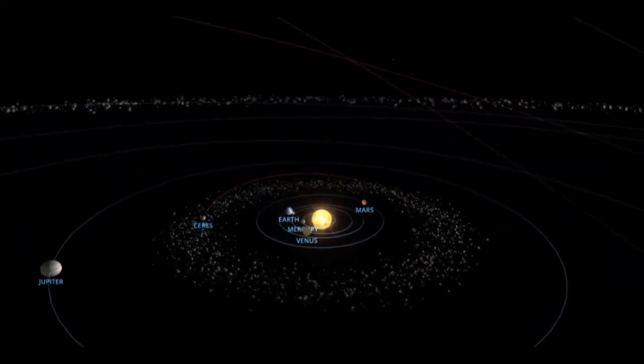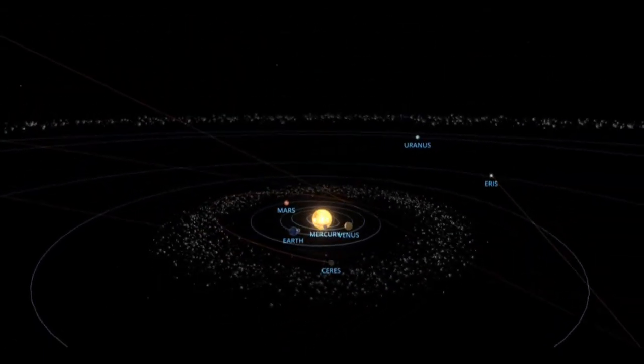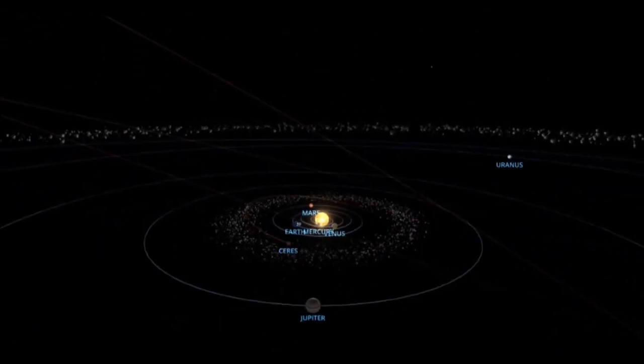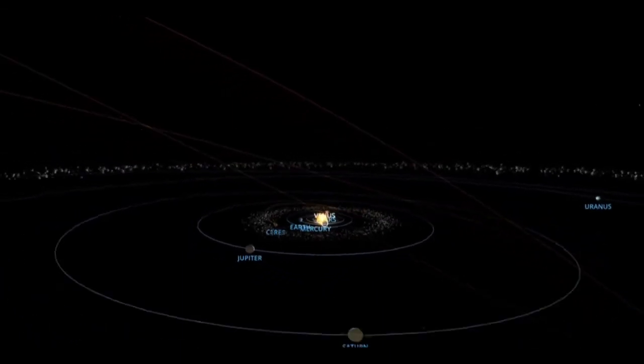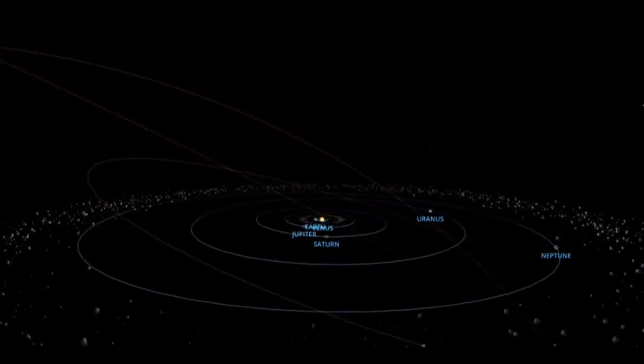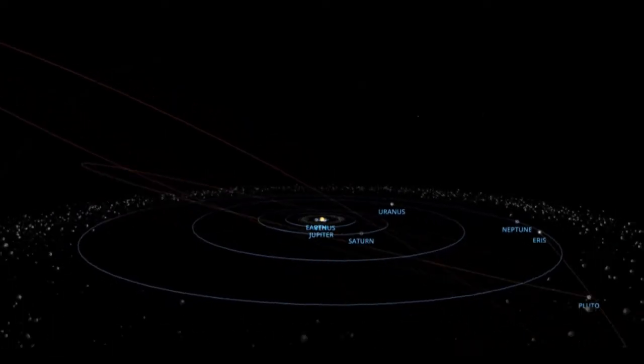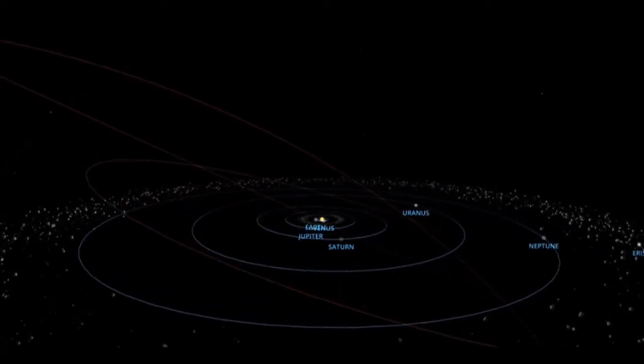This gap is populated by the asteroid belt, a collection of countless lumps of rock, both big and small, and in all shapes and sizes. As we continue to head out past Jupiter, we pass Saturn, Uranus, and Neptune, and eventually reach another collection of countless bodies, the Kuiper Belt, which also houses Pluto.